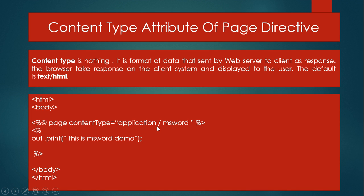Using the declaration tag and calling the implicit object 'out' and then the print method, passing 'This is the MS Word demo' terminated with a semicolon. When you write this code in Eclipse and run it, the statement 'MS Word demo' opens in MS Word.